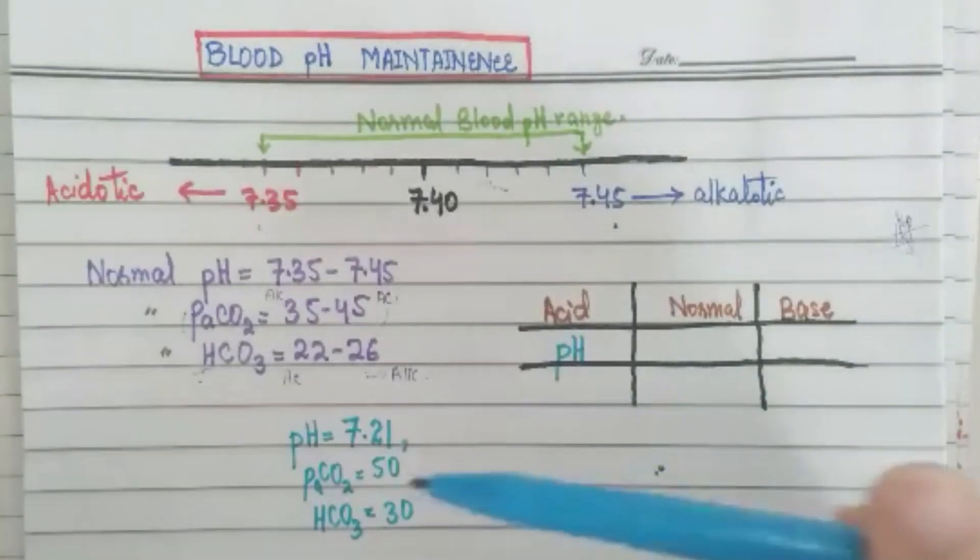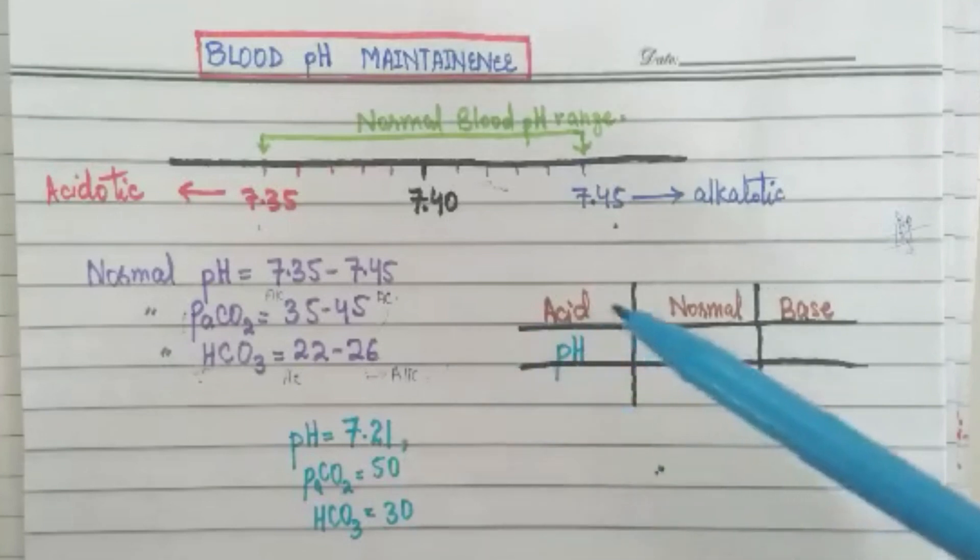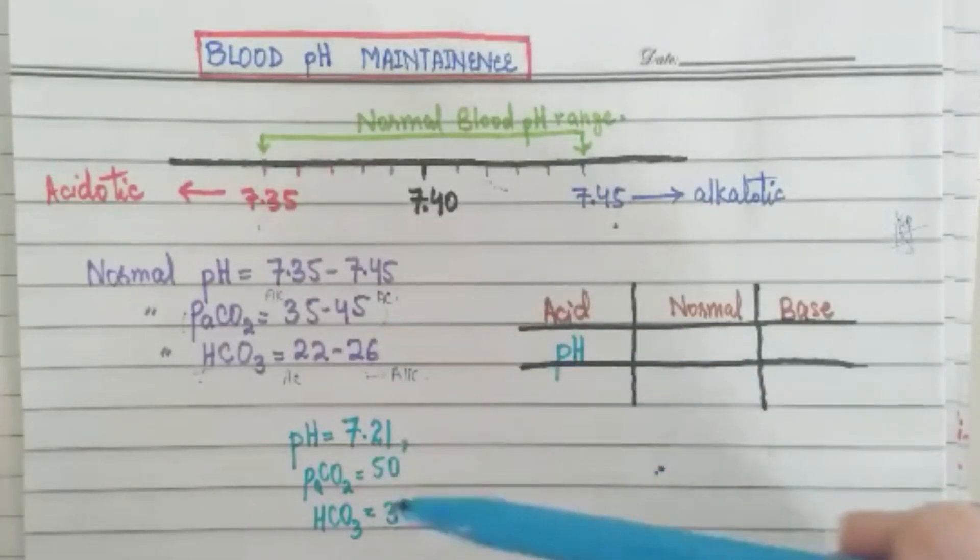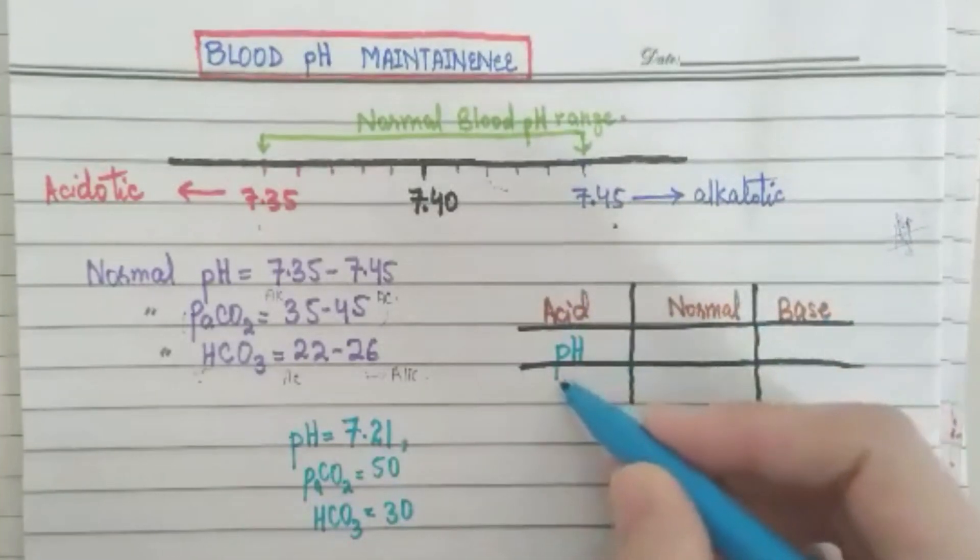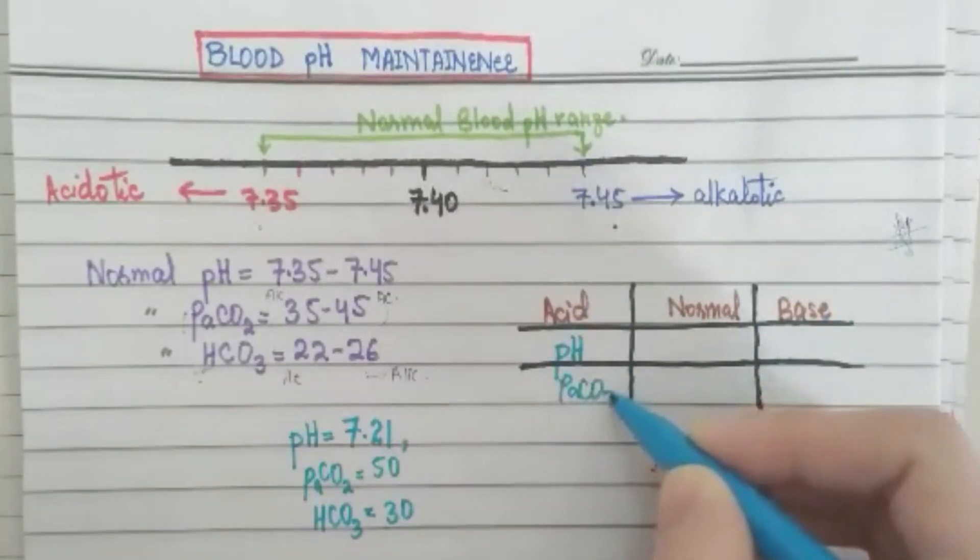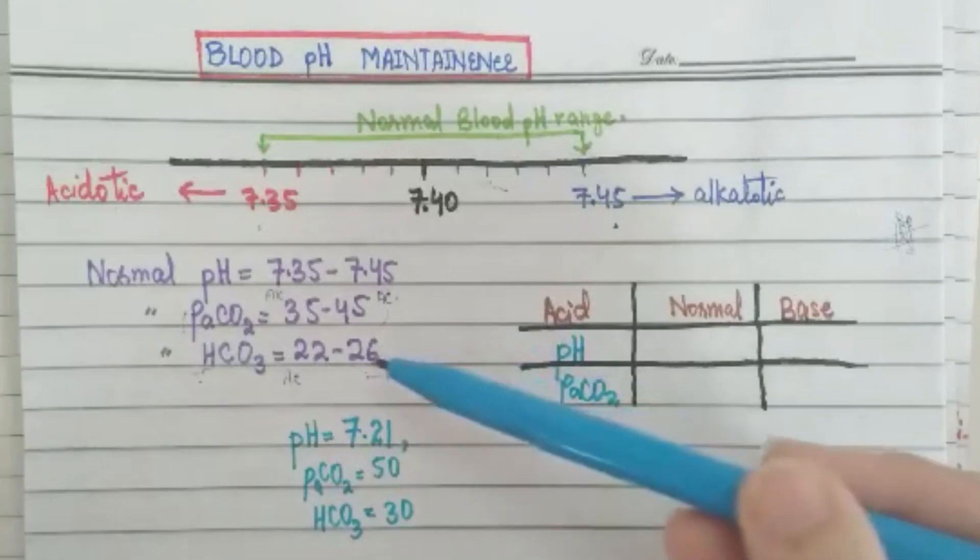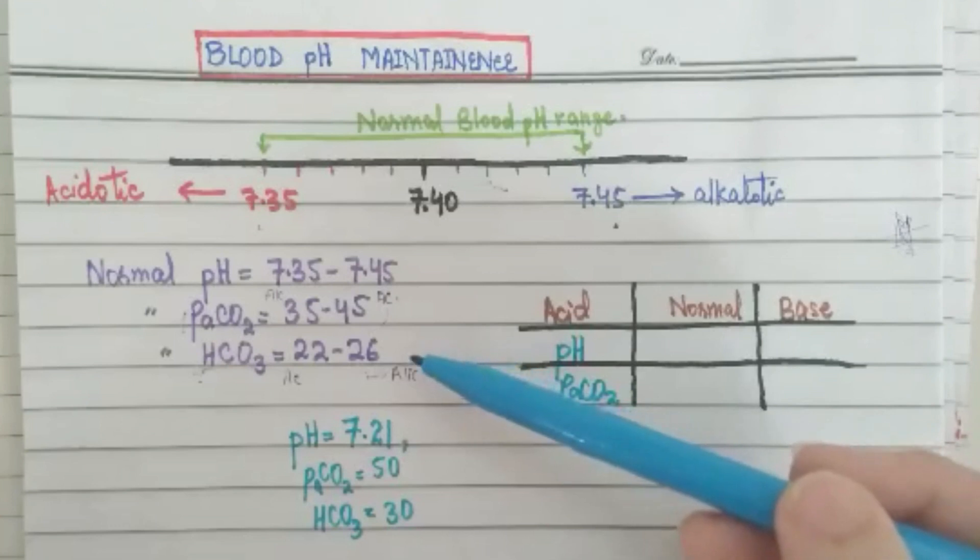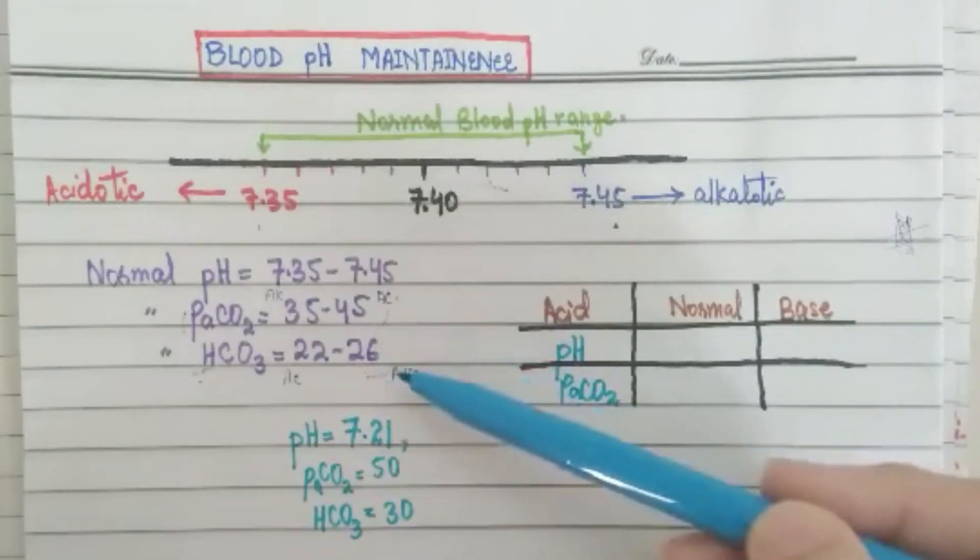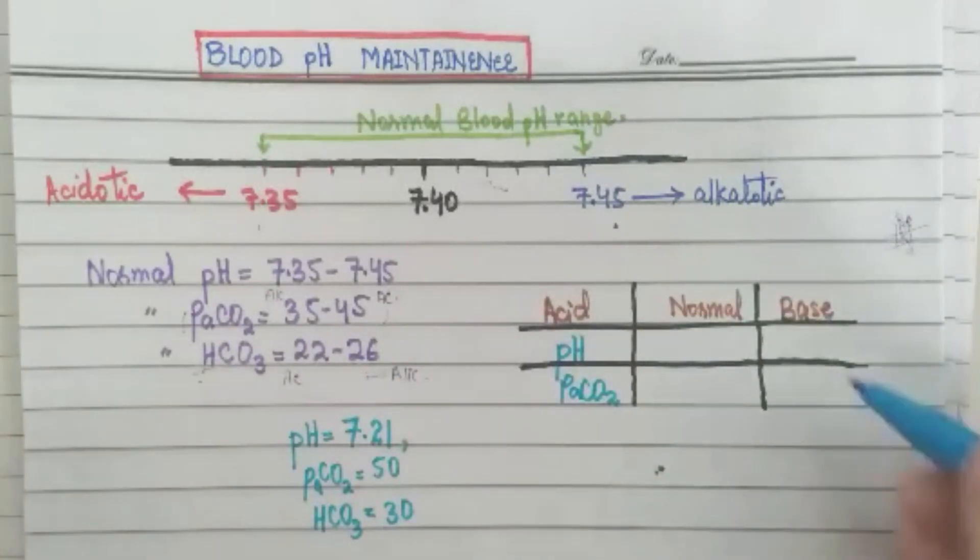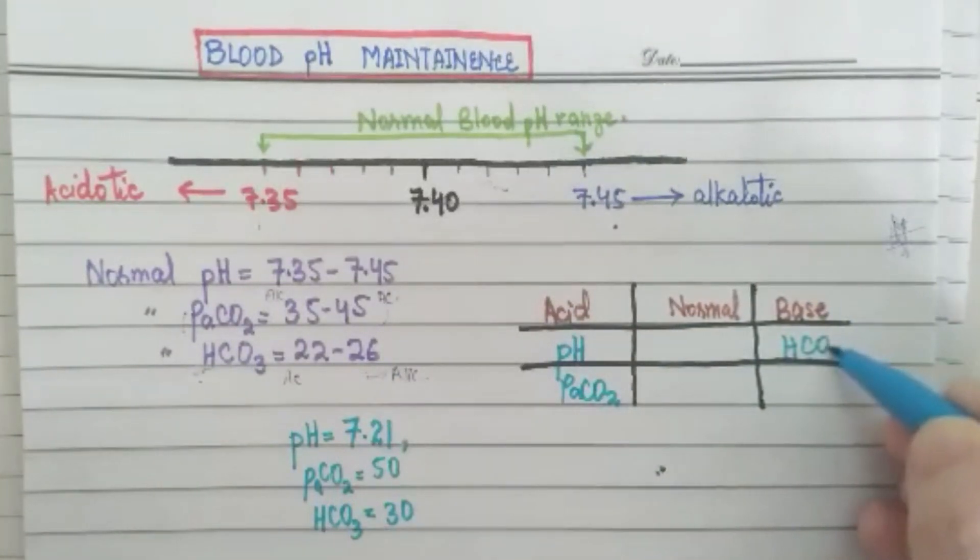Now partial pressure of carbon dioxide is 50. What is normal? 35 to 45. It is more. Carbon dioxide is more, which range? Acidotic again. This is acid. So partial pressure of carbon dioxide is also acid. Bicarbonate, what is bicarbonate? This is bicarbonate range 22 to 26. So this is more than 26, the value is 30. Because it is more this is alkalosis, alkalotic and base. So bicarbonate is base.